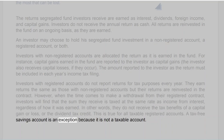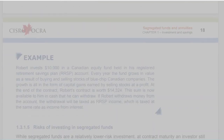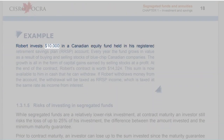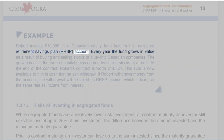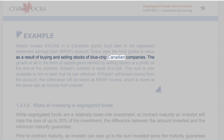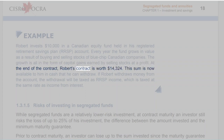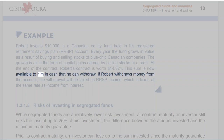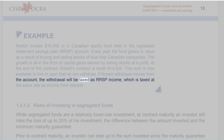A tax-free savings account is an exception because it is not a taxable account. For example, Robert invests $10,000 in a Canadian equity fund held in his RRSP. Every year the fund grows through capital gains from buying and selling blue-chip Canadian stocks. At the end of the contract, Robert's contract is worth $14,324. If Robert withdraws money from the account, the withdrawal will be taxed as RRSP income — at the same rate as income from interest.